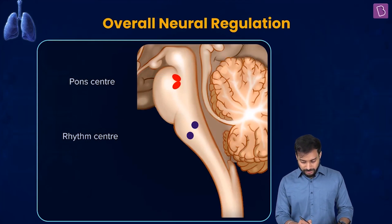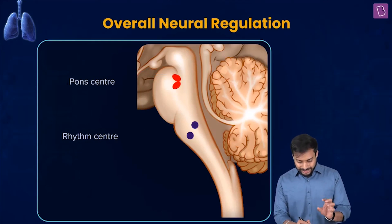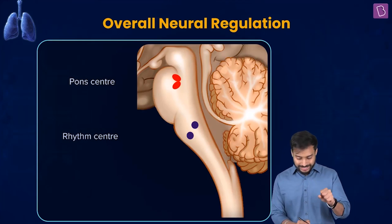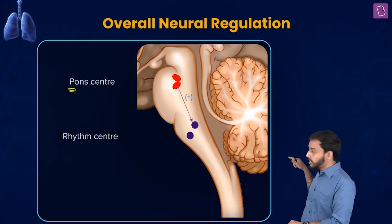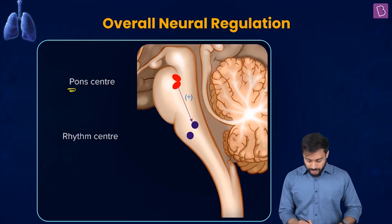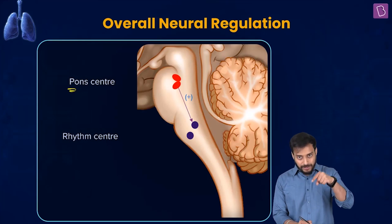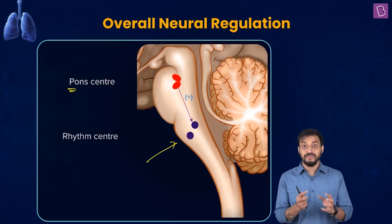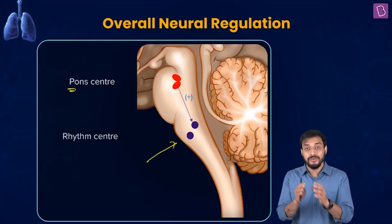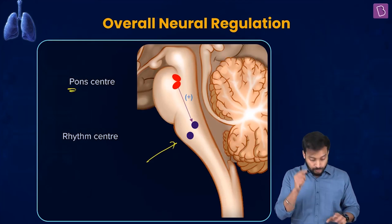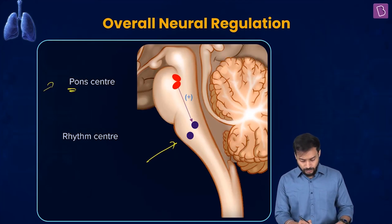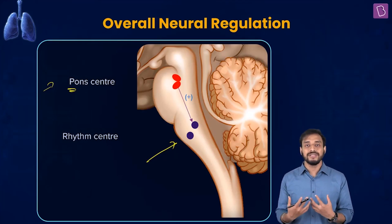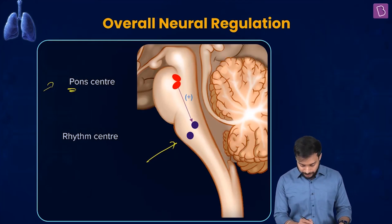The rhythm center controls the respiration. The signals from the pons center come to the rhythm center. The rhythm center, via the inspiratory group and the expiratory group, processes these signals. The inspiratory group and expiratory group are part of the respiratory rhythm center, so the signals sent by the pons center move through the rhythm center, which involves the inspiratory and expiratory group, helping control all the muscles involved in respiration.